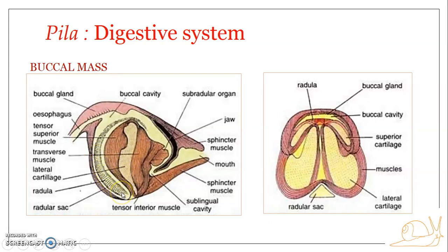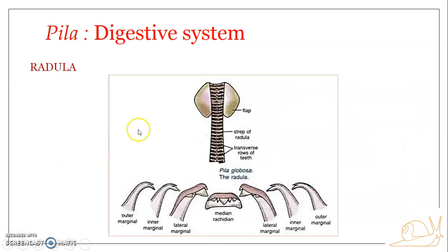The radula is formed by secretion of the epithelial lining of the radula sac, which is responsible for its secretion and formation. Below the radula there is a sub-radular membrane, which is delicate, elastic, and supports the radula. The dorsal surface of the radula bears teeth arranged in transverse rows.